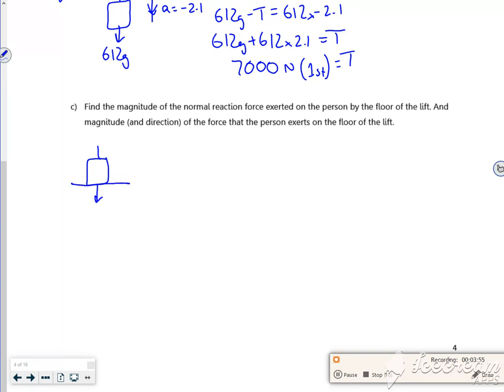Hang on, I've drawn that wrong. This is my person. I've got 72G downwards and R upwards. I'm assuming that's still going down with acceleration minus 2.1. I'm just going to set it up - I'm going to pause for a second.